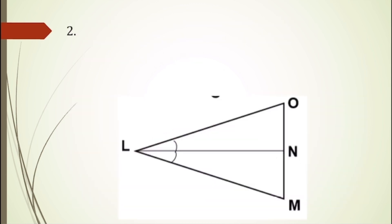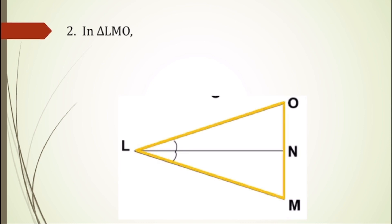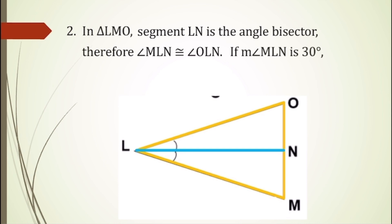For our second example, in triangle LMO, segment LN is the angle bisector. Therefore, angle MLN is congruent to angle OLN. If the degree measure of angle MLN is 30 degrees, then the degree measure of angle OLN is also 30 degrees.